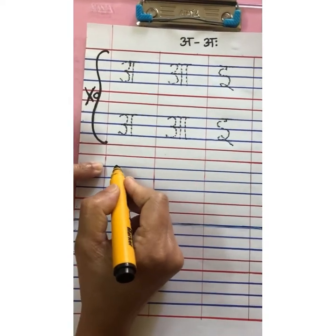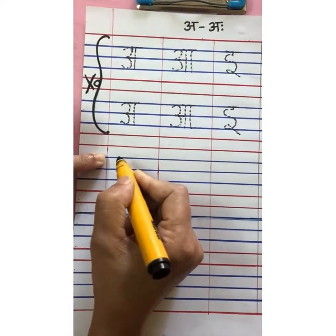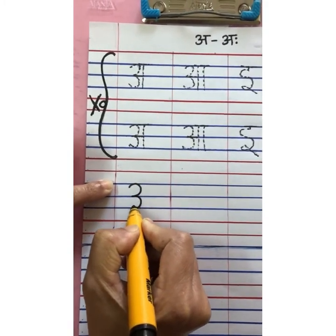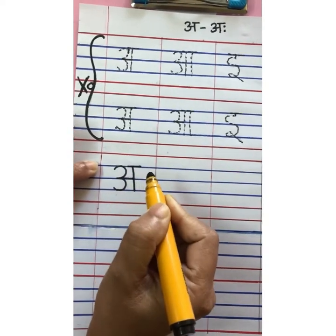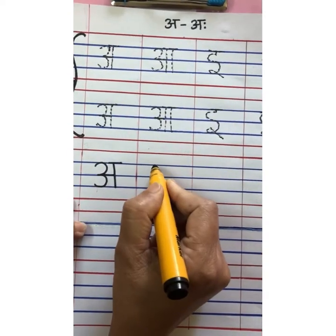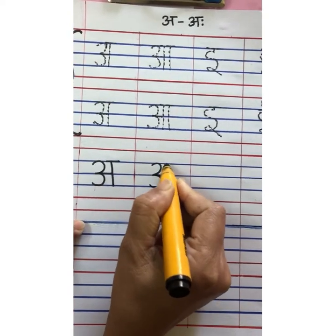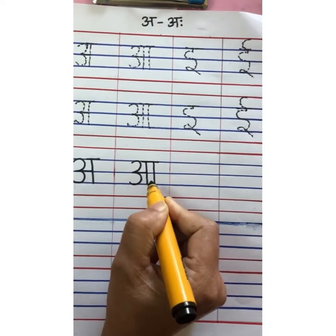So start with the first blue line. First swar is a ha. Write a ha. Then comes a ha. So write a ha.